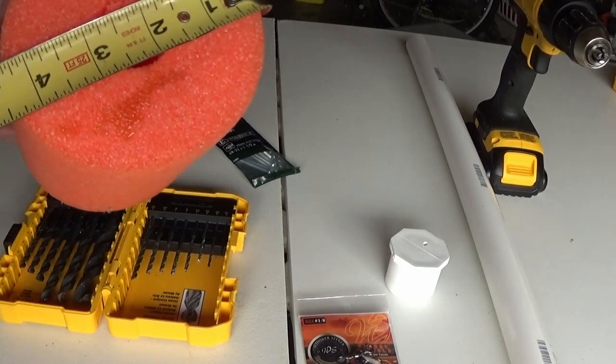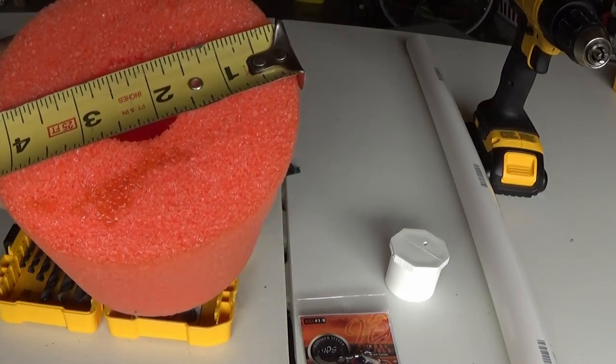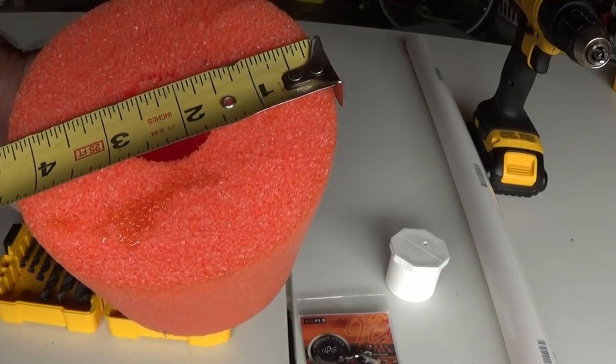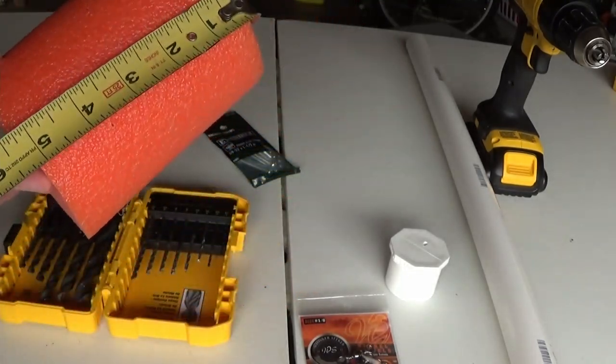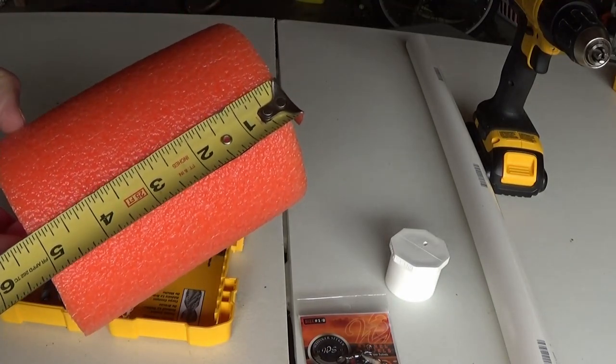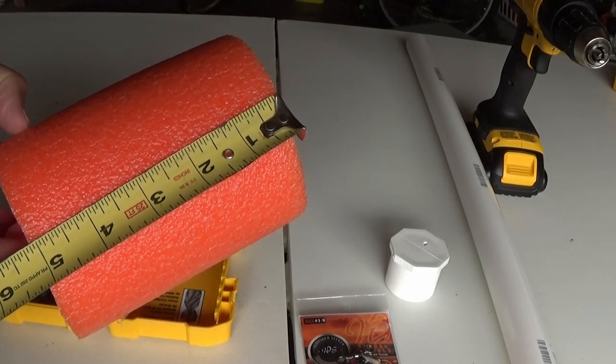These pool noodles are about almost four and a half. You can make them whatever size you want. I'm going to make them about two inches thick. So I'll cut this.